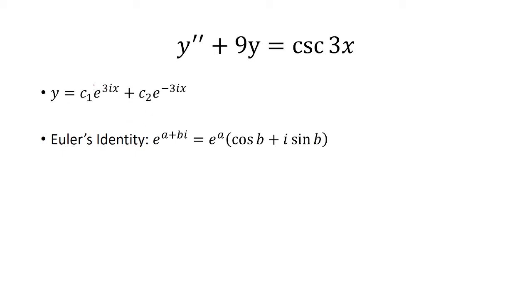a for us here is going to be 0, because it's 0 plus 3ix and 0 minus 3ix. So e^0 is just 1, so I'm not even going to bother writing that out.